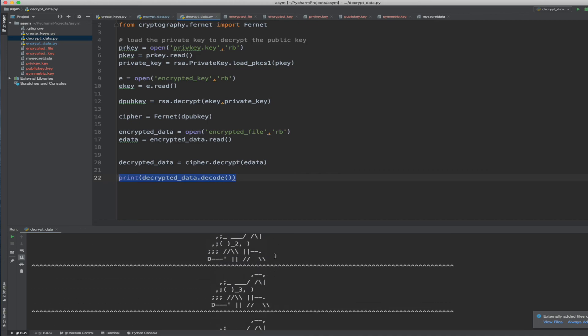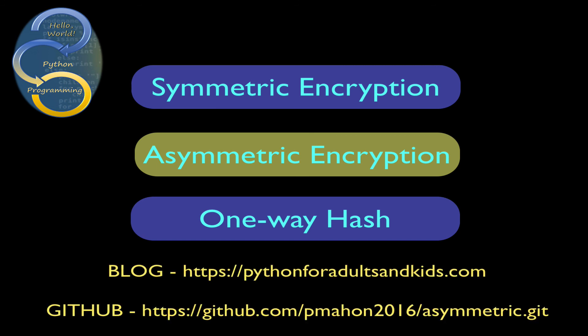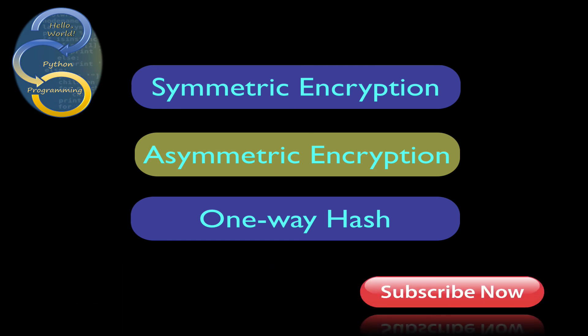That's a basic introduction into asymmetric encryption with Python. There are many libraries available to accomplish this — I found the RSA library we used here to be the most straightforward. All the code is available on my blog or on my GitHub. In the next lesson, we'll look at the one-way hash, which is a critical part of the whole encryption framework. If you enjoyed these videos, please don't forget to subscribe. Thanks again for watching and I'll see you soon.